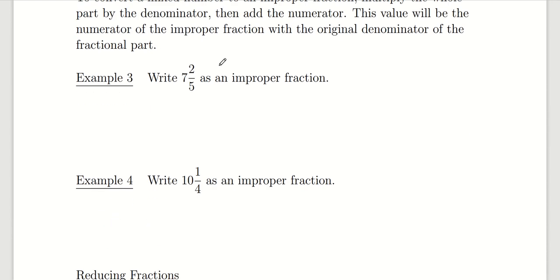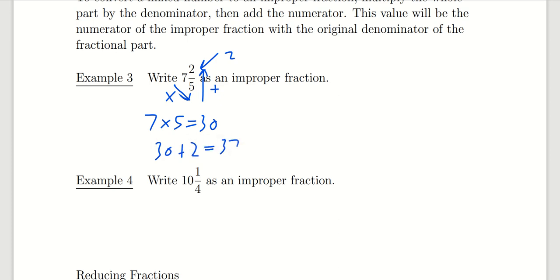We can go the other direction. If we start with a mixed number, we can convert it into an improper fraction using a process some people refer to as 'around the world.' We multiply the whole part by the denominator. If we're looking at the fraction 2 fifths, we're looking at pieces out of 5. If we have 7 whole components, we do 7 times 5 first, which gives us 35. Then we add the numerator, which is 2: 35 plus 2 gives us 37. That's the numerator of our improper fraction, and the denominator stays as 5. So 7 and 2 fifths equals the improper fraction 37 over 5.